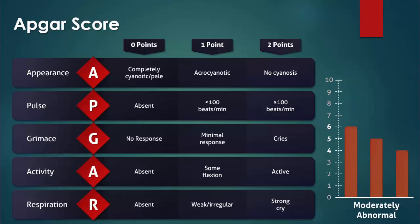A score between 4 and 6 is considered to be moderately abnormal. These babies need some resuscitative efforts such as nasal suctioning and oxygenation.